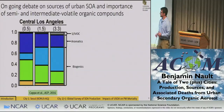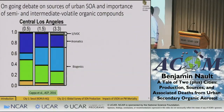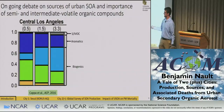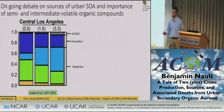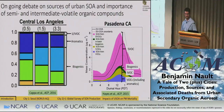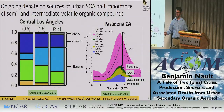But Patrick Hayes, in a different paper, had a very different conclusion — that most of the SOA was coming from semi-volatile and intermediate-volatile organic compounds and basically nothing from biogenics. So there's this ongoing debate about how much biogenics play a role in urban areas and how important IVOCs are for SOA production in urban areas.